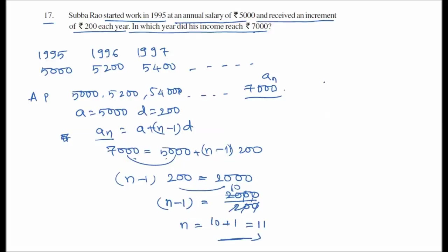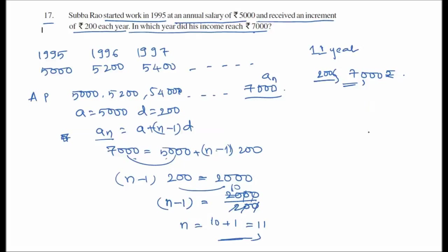The 11th year corresponds to 1995 plus 10 equals 2006. So he reaches a salary of 7000 rupees in the year 2006.